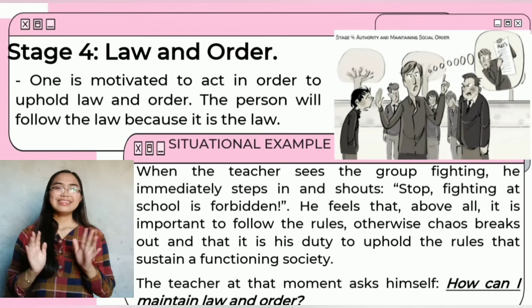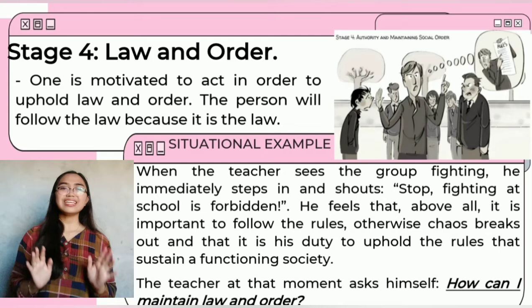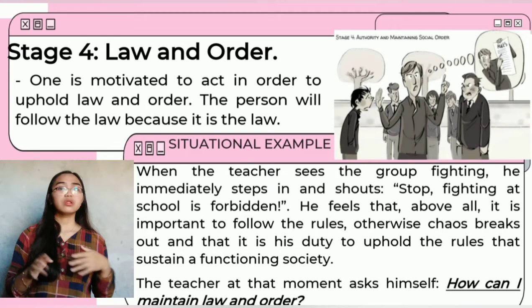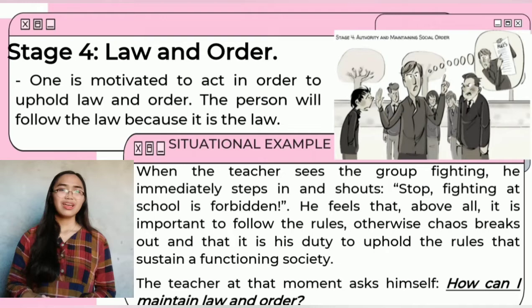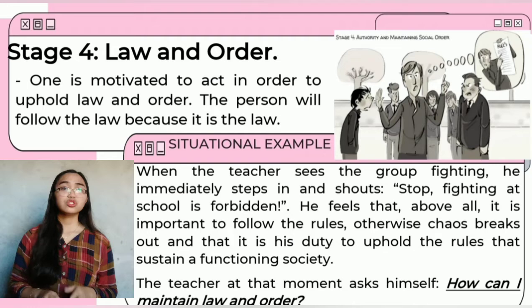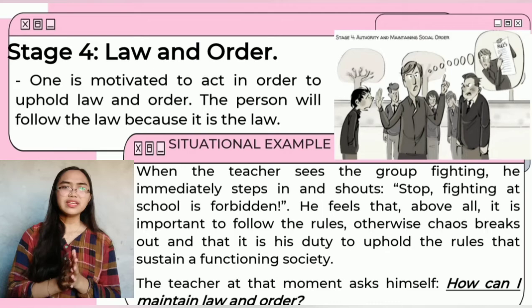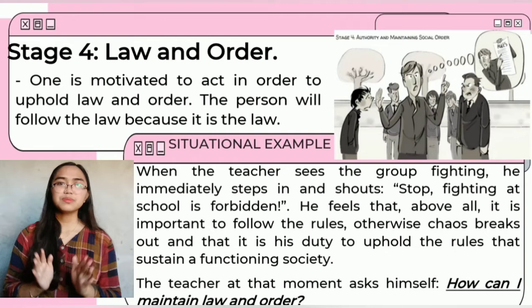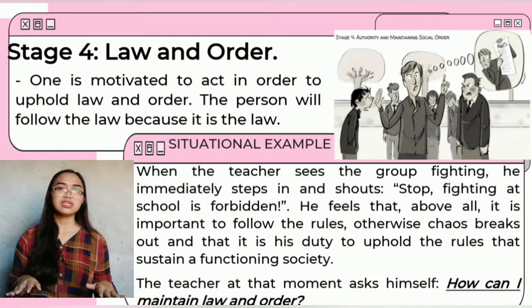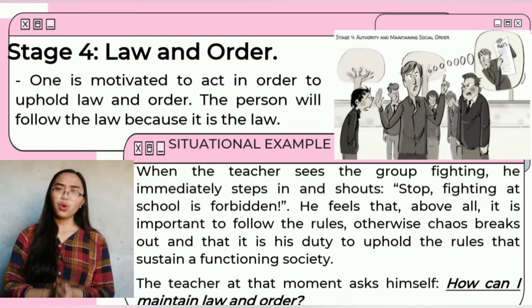Stage four is the law and order stage. One is motivated to act in order to uphold law and order; the person will follow the law because it is the law. For instance, at stage four, we value authority and want to maintain social order. When the teacher sees the group fighting, he immediately steps in and shouts, stop fighting at school, it is forbidden. He feels that, above all, it is important to follow the rules, otherwise chaos breaks out, and that it is his duty to uphold the rules to sustain a functioning society. The teacher asks himself, how can I maintain law and order?